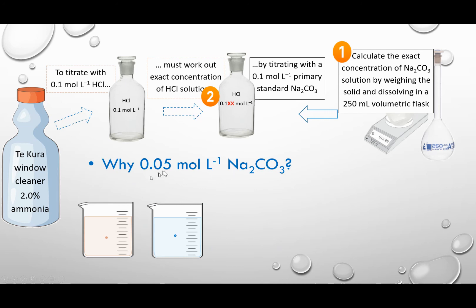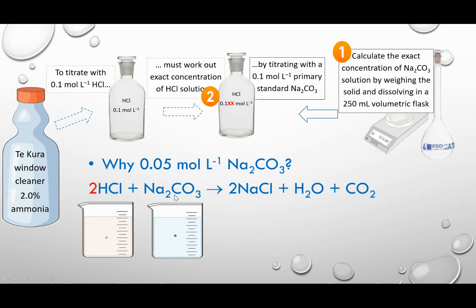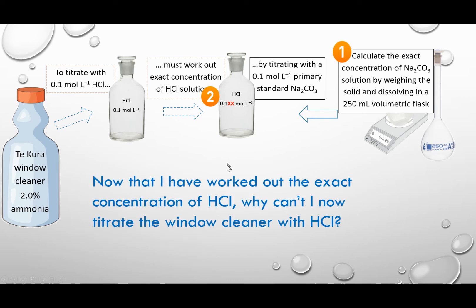So why 0.05 moles per litre if we need to use 0.1? That's because we need to do the balanced equation. We find out that it's not one sodium carbonate reacting with one HCl, but one sodium carbonate reacts with two HCl. So we need double the concentration of HCl for every sodium carbonate — we need 0.05 mol/L of sodium carbonate for every 0.1 mol/L of HCl. Now, I've known my exact concentration of HCl, and you will be doing this all theoretically. You won't actually be doing these titrations — you'll just do the calculations.